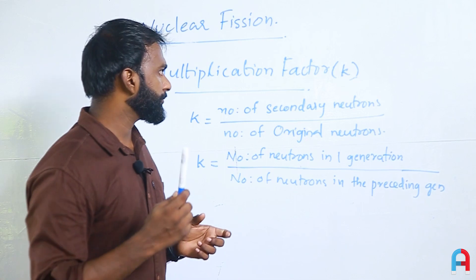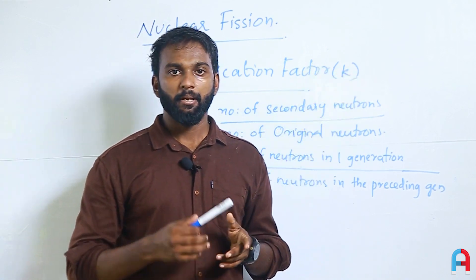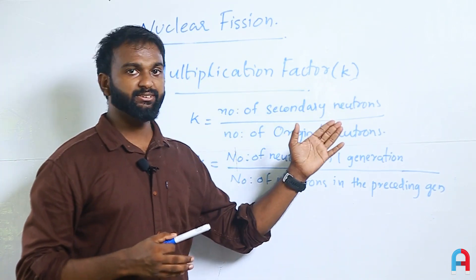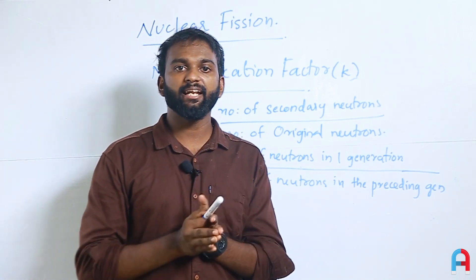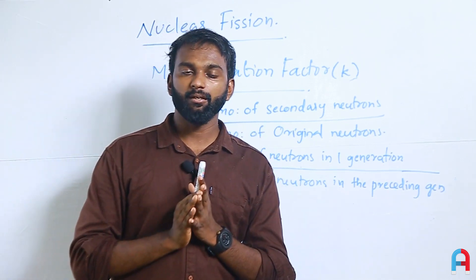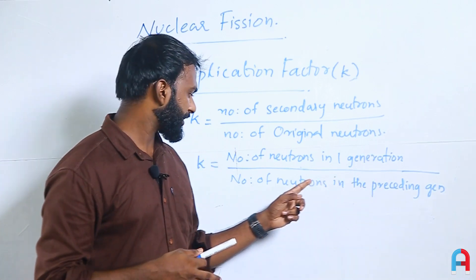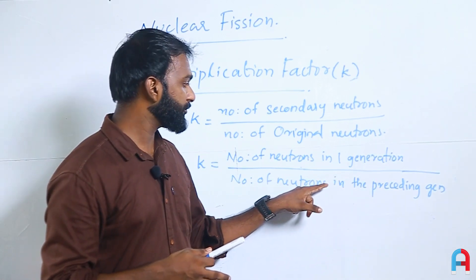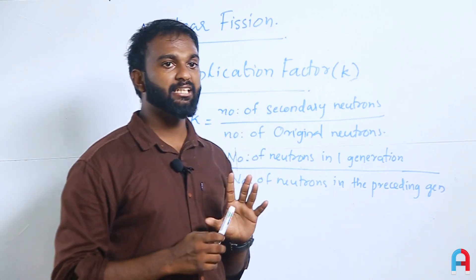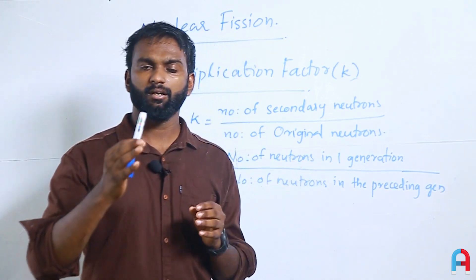Nuclear reaction has a multiplication factor, k. It is the ratio of the number of secondary neutrons to the number of original neutrons — or more precisely, the number of neutrons in one generation to the number of neutrons in the preceding generation.